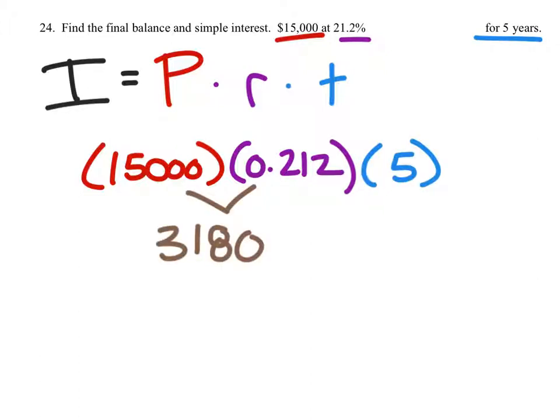And when I multiply the $15,000 by the 0.212, I get $3,180, which I will then multiply by the five, which would be $15,900.